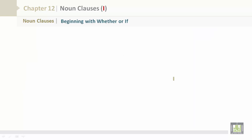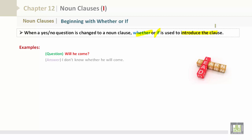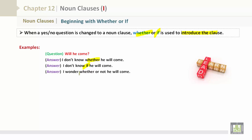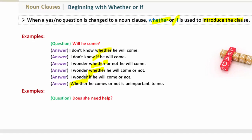Noun clauses beginning with 'whether' or 'if.' When a yes/no question is changed to a noun clause, whether or if is used to introduce the clause. Examples — Question: Will he come? Answer: I don't know whether he will come. I don't know if he will come. I wonder whether or not he will come. I wonder whether he will come or not. I wonder if he will come or not. Whether he comes or not is unimportant to me. Does she need help? — I wonder whether she needs help. I wonder if she needs help.